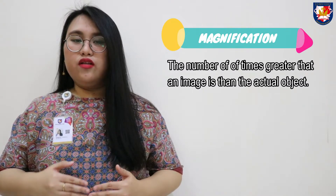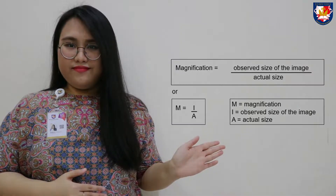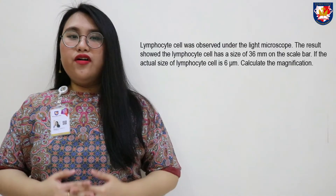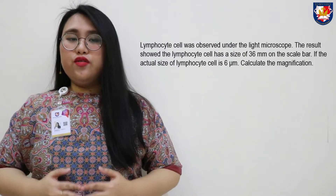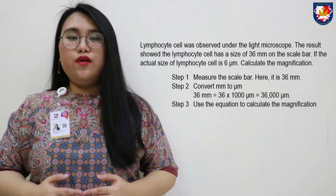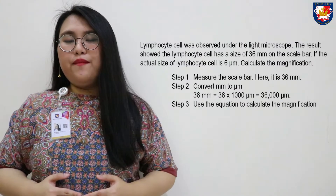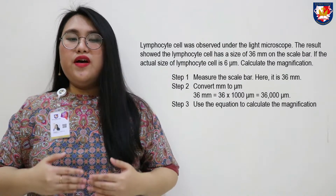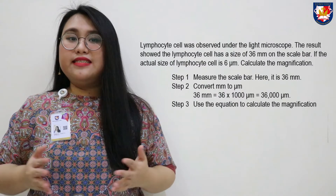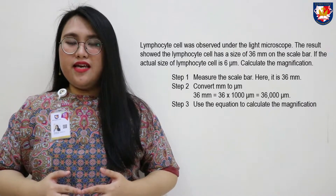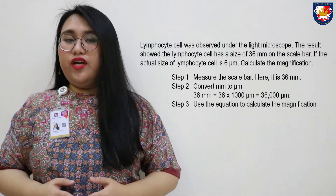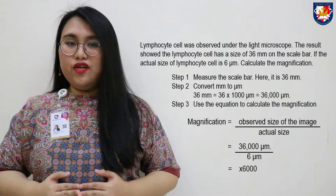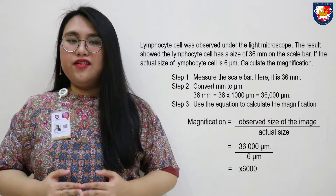Magnification is the number of times greater an image is compared to the actual object. Here is the equation for magnification. To answer the example equation, the first step is to measure the scale bar, which is 36 millimeters. The second step is to convert millimeters to micrometers so you have the same unit of length. The third step is to use the equation, giving an answer of 6,000 times magnification.